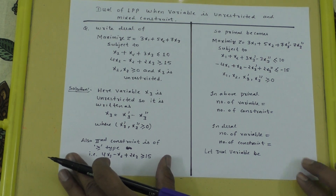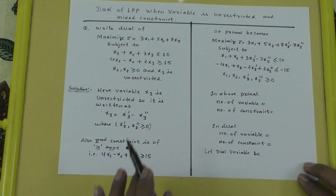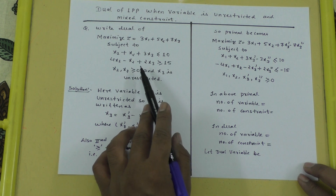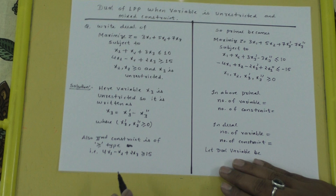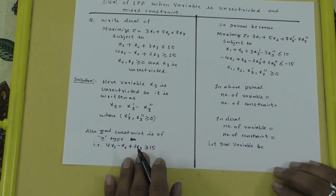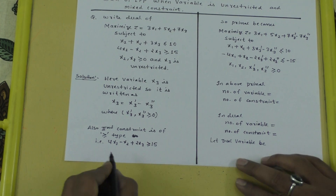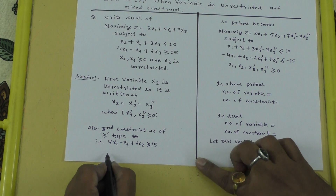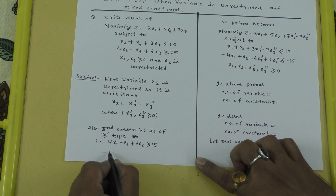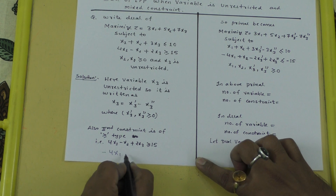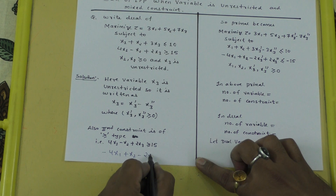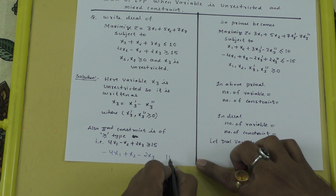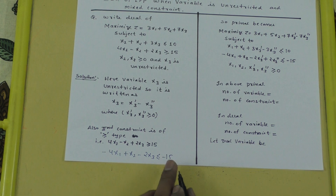For the second constraint, 4x1 minus x2 plus 2x3 greater than or equals to 15, we need to convert it to less-than type. We multiply both sides by minus 1, giving us minus 4x1 plus x2 minus 2x3 less than or equals to minus 15.